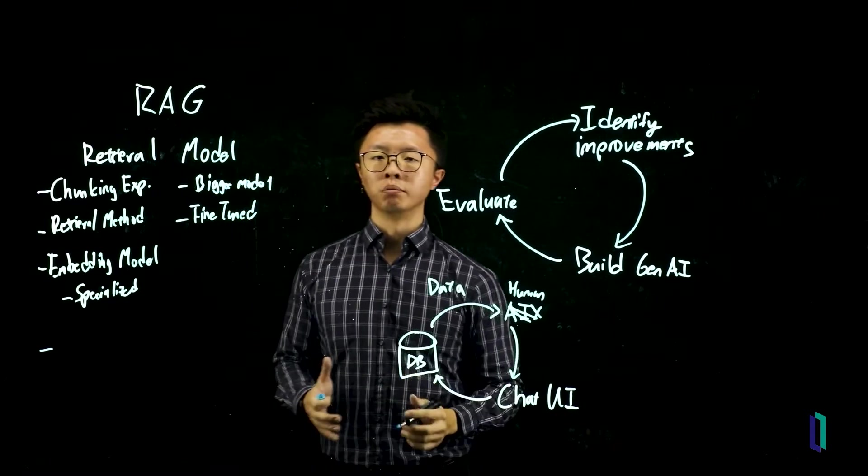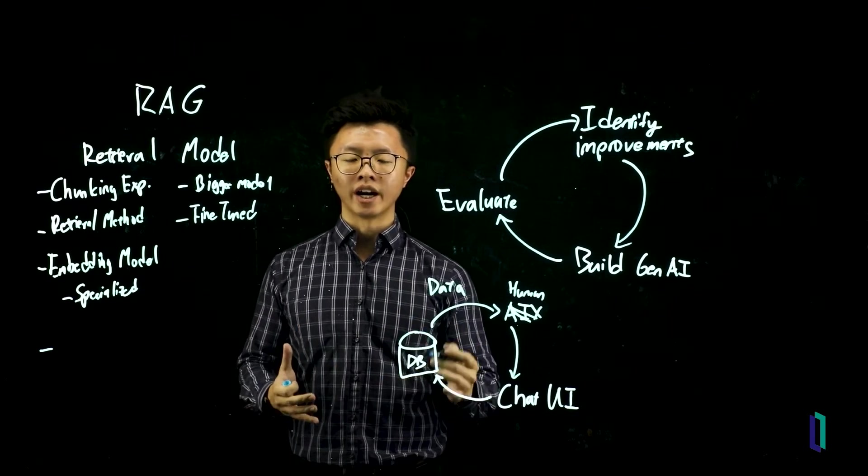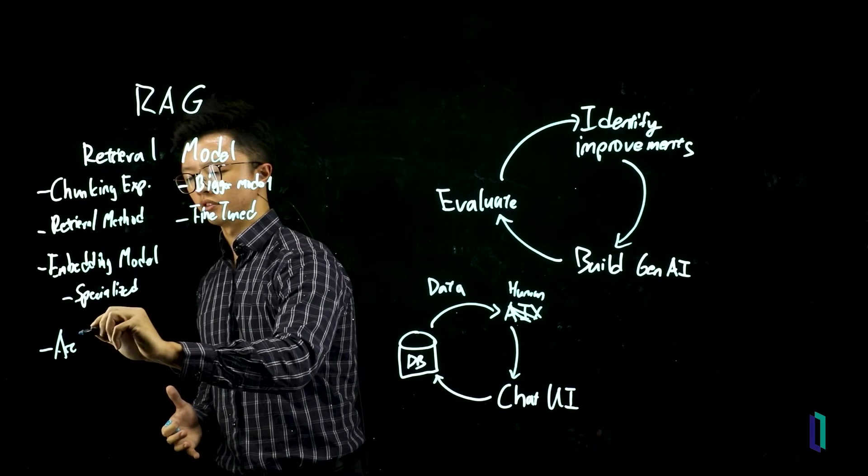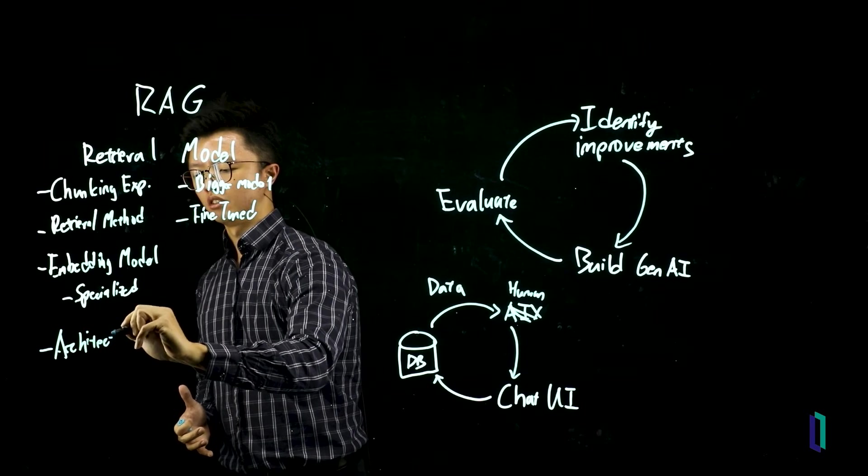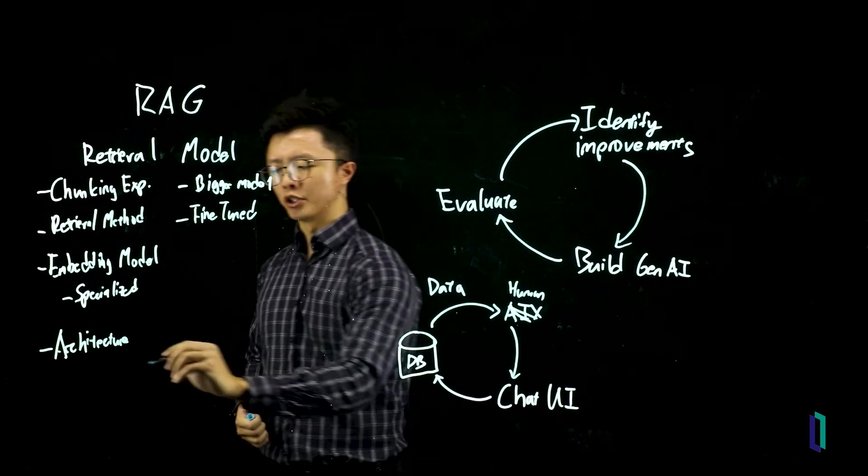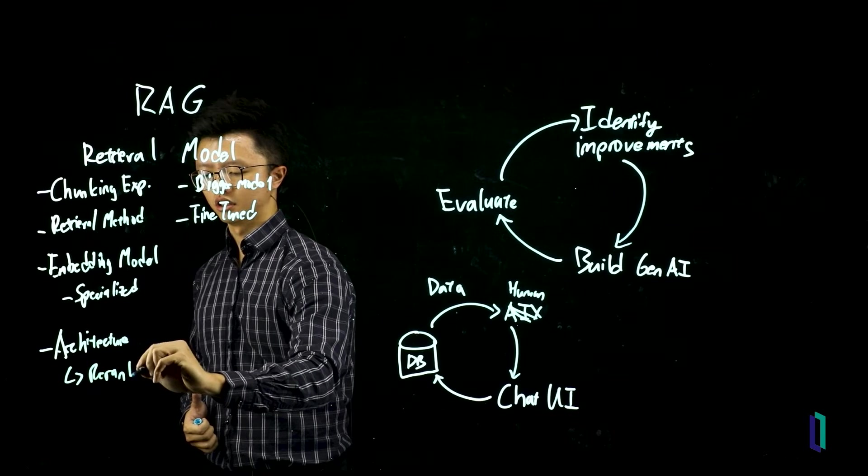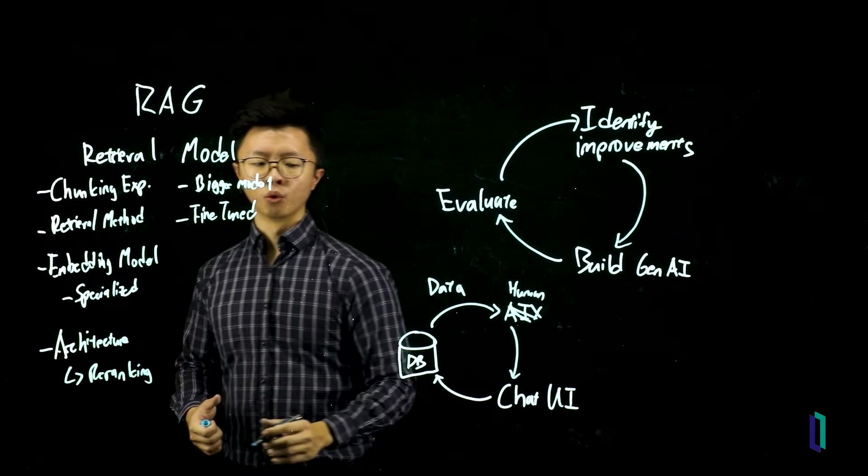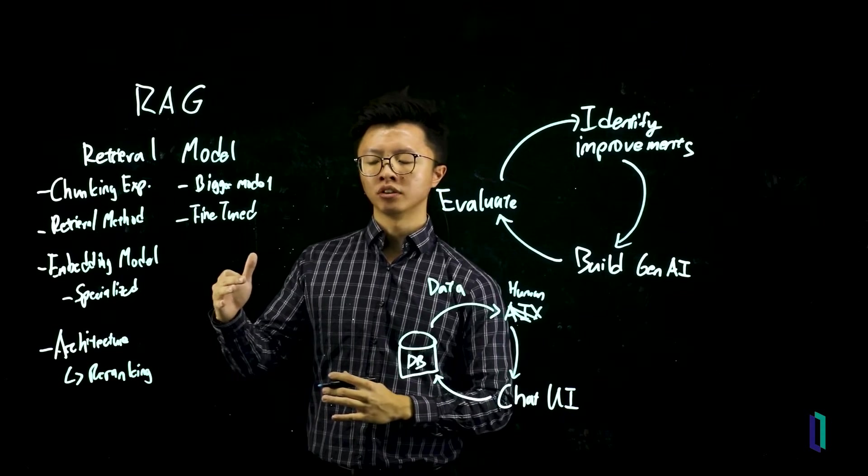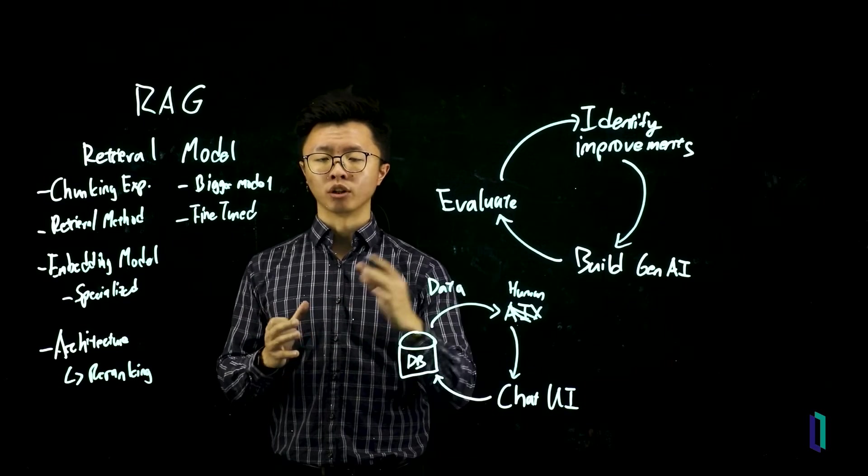Now, the final way to improve your retrieval system is to change the architecture of your RAG by including more components. Some proven ways to improve your system will be to introduce a re-ranking layer. So once you retrieve the top five from the vector database, for example, you put it through a re-ranker that will more accurately re-rank it based on what you need.